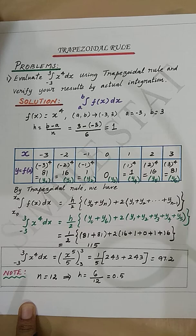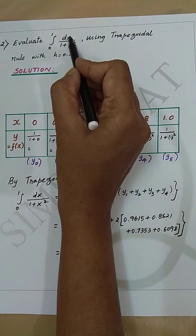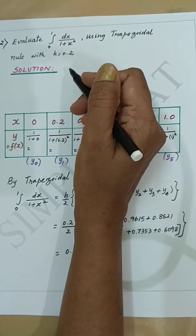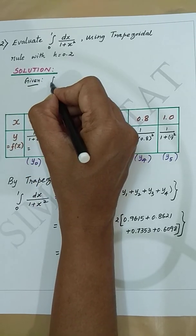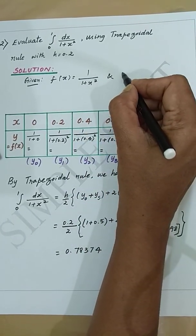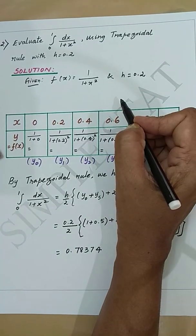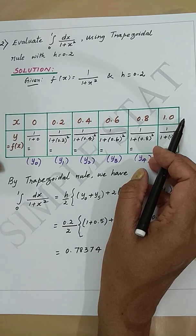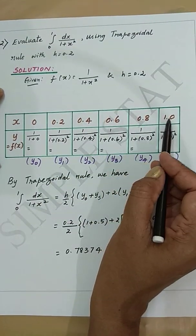Let's now proceed with the next problem: evaluate the integral from 0 to 1 of dx/(1 + x²) using the trapezoidal rule with h = 0.2. Given f(x) = 1/(1 + x²) and h = 0.2, which is specified in the problem itself. Taking h = 0.2, the x values start at the lower limit 0 and go up as 0.2, 0.4, 0.6, 0.8, 1.0.